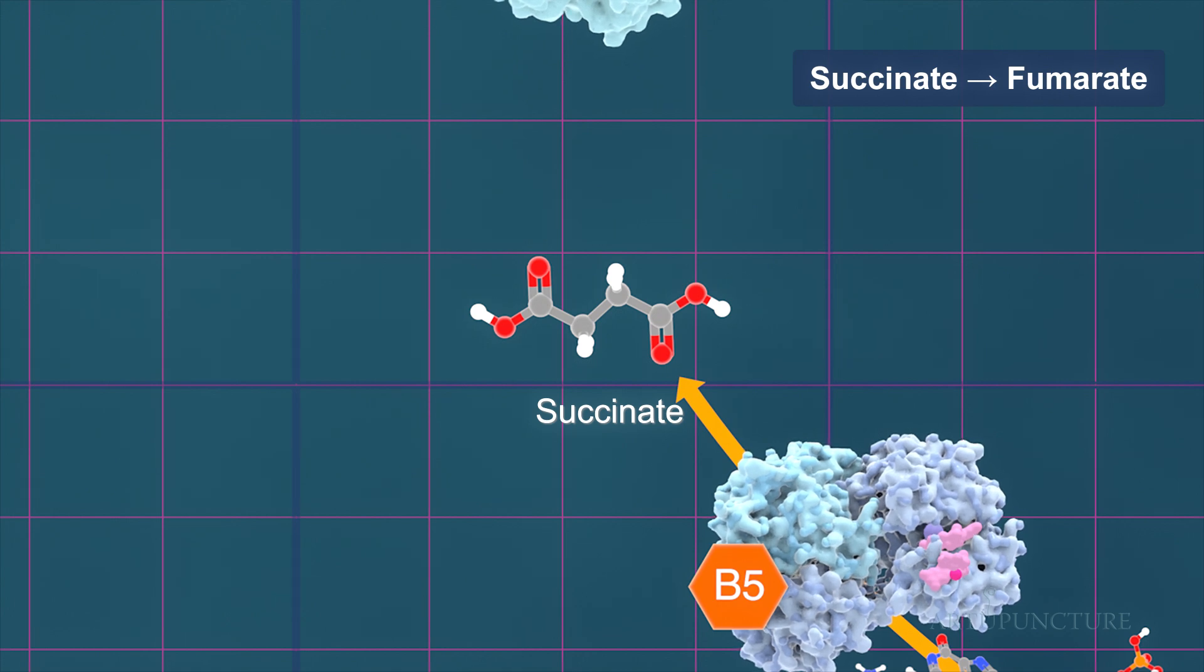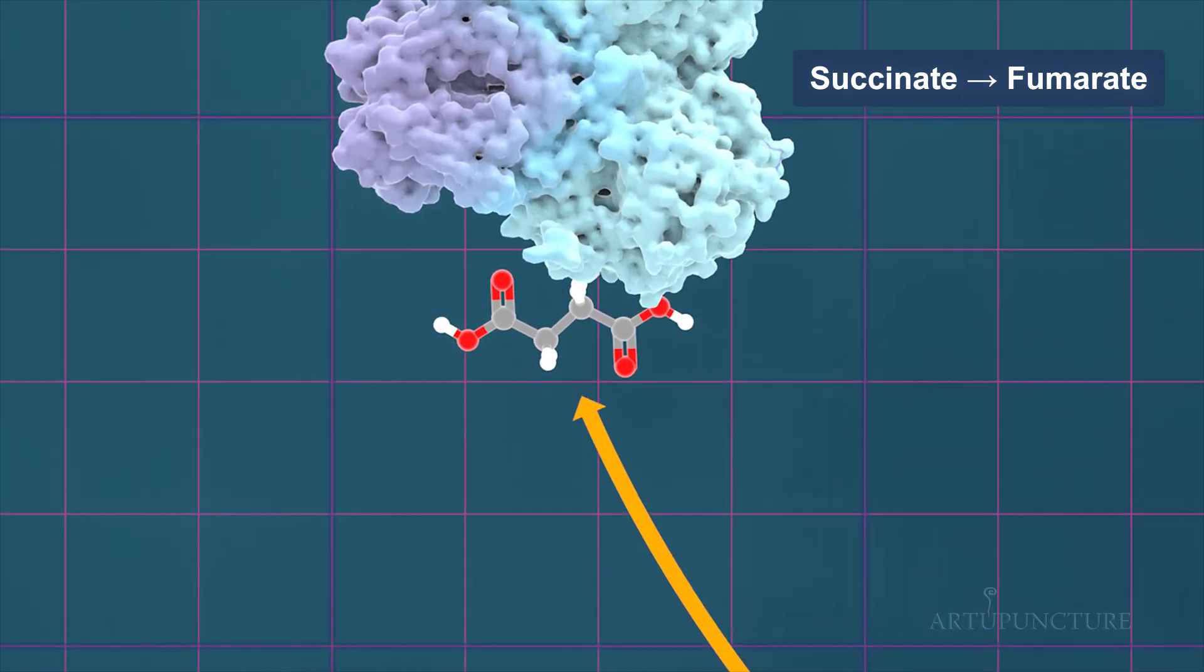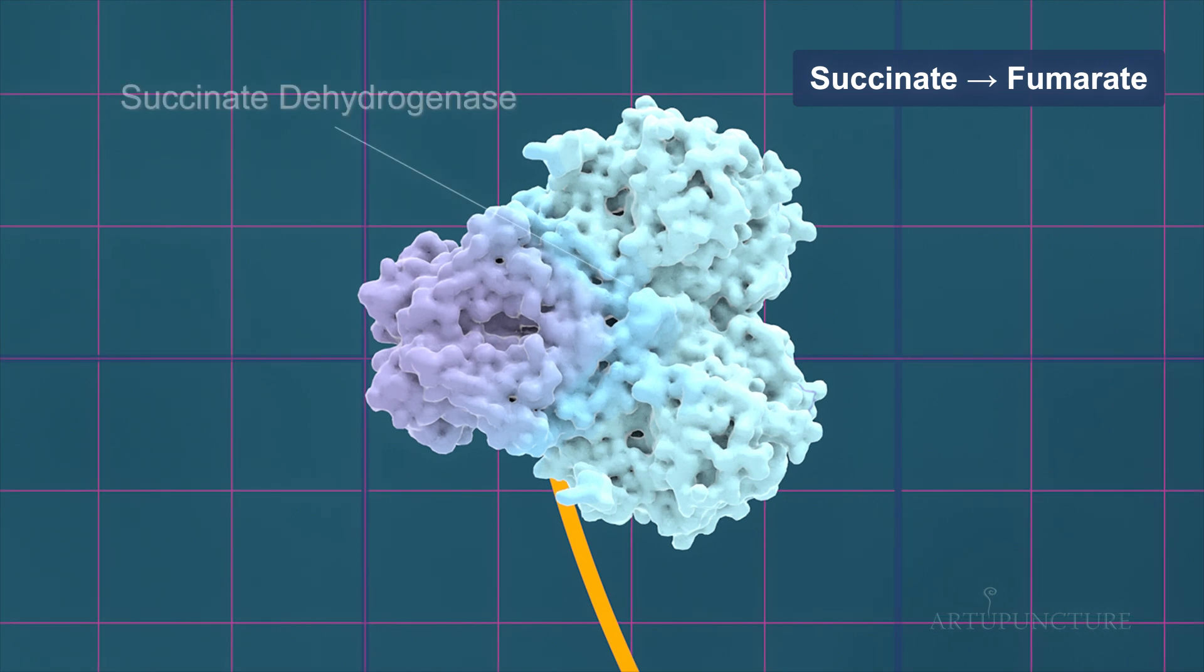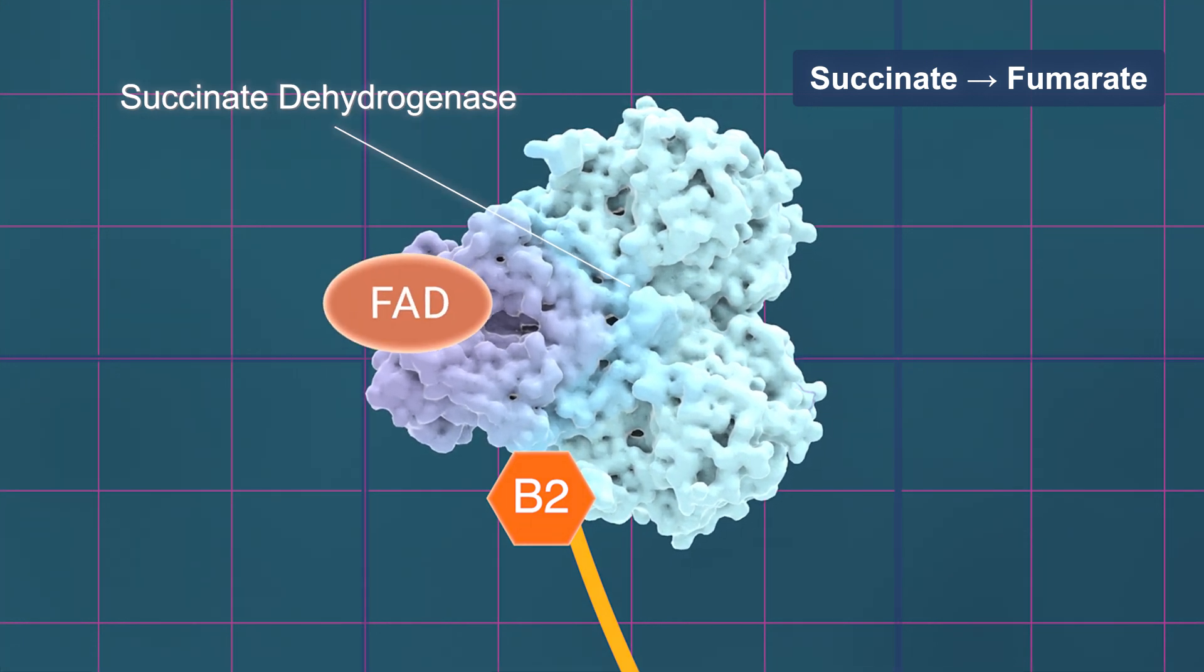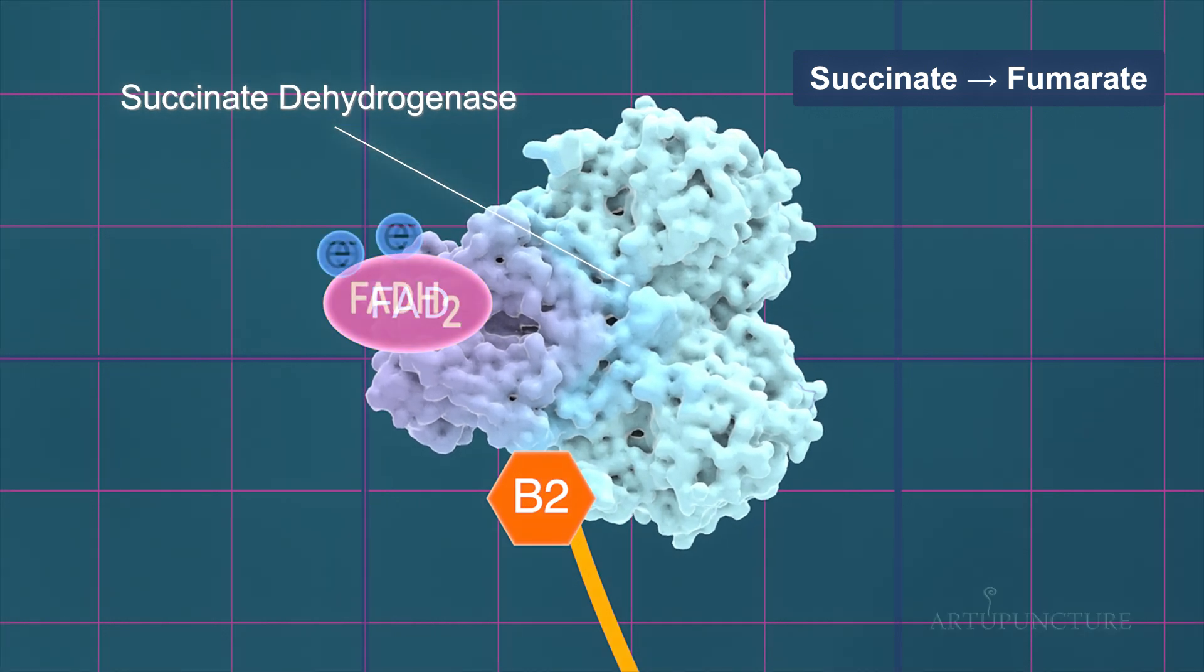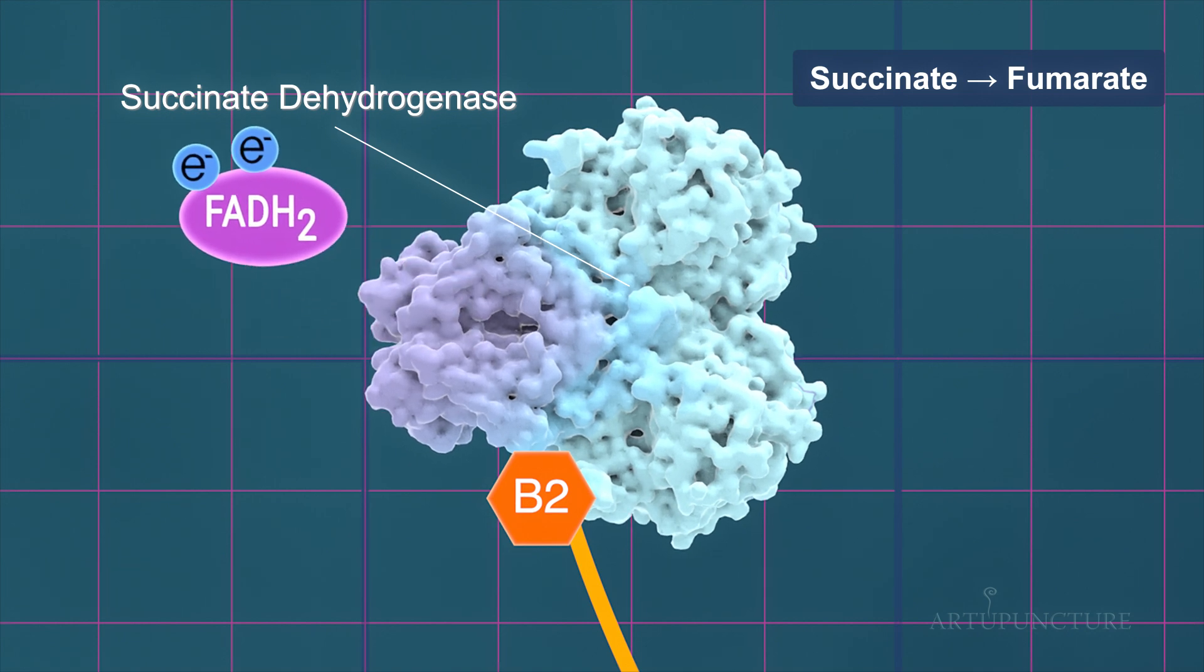Succinate is oxidized to fumarate, a reaction catalyzed by the enzyme succinate dehydrogenase. Vitamin B2 supports the synthesis of FAD, which is reduced to FADH2. The produced FADH2 travels to the electron transport chain.